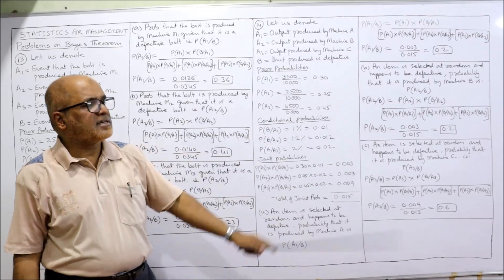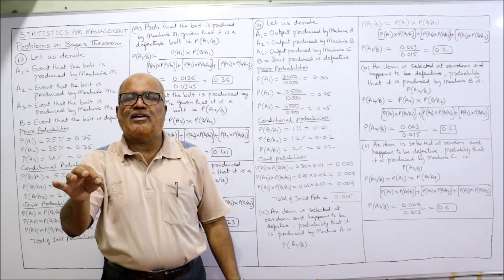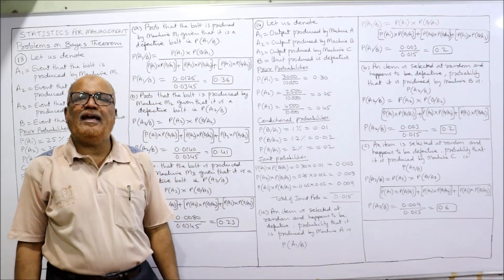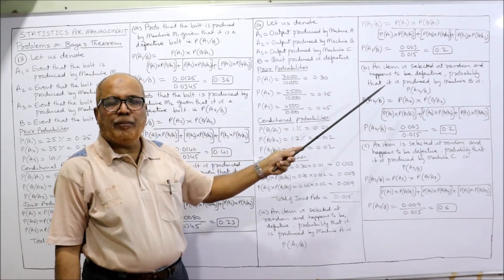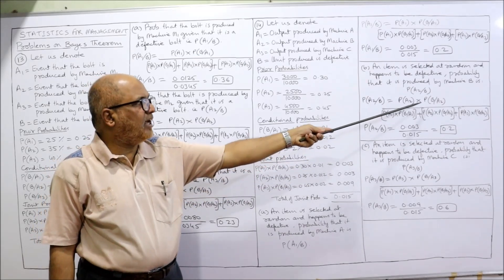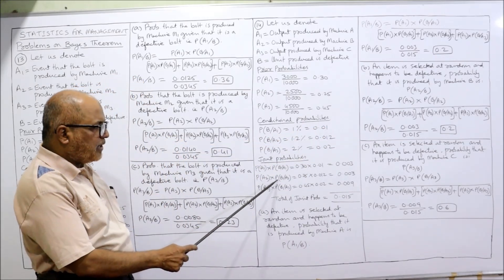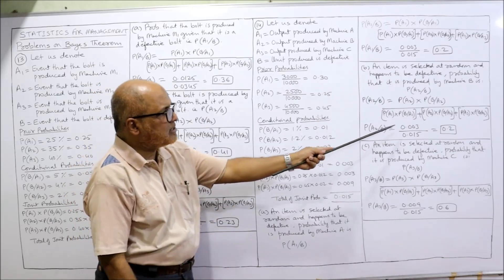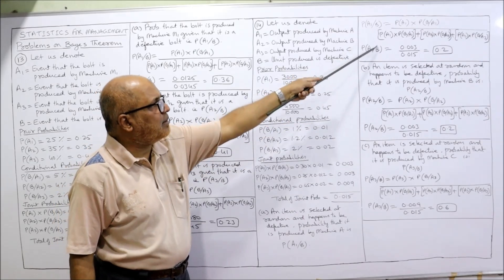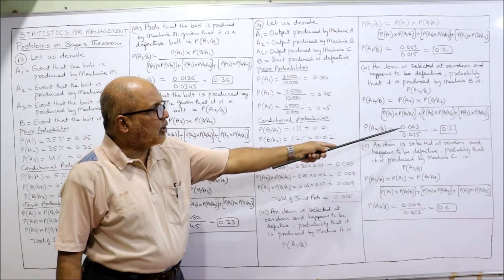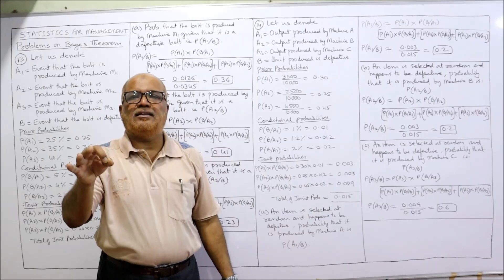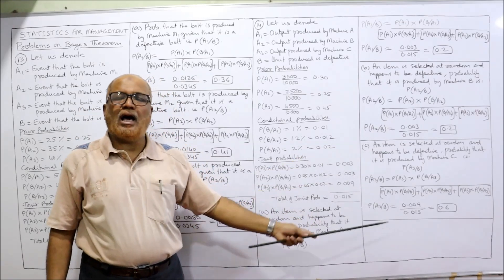Second case: an item is selected at random and happens to be defective — what is the probability it comes from machine B? P(A2|B) = P(A2)·P(B|A2) divided by sum of joint probabilities = 0.003 ÷ 0.015 = 0.2. So 0.2 is the probability that the defective item comes from machine B.